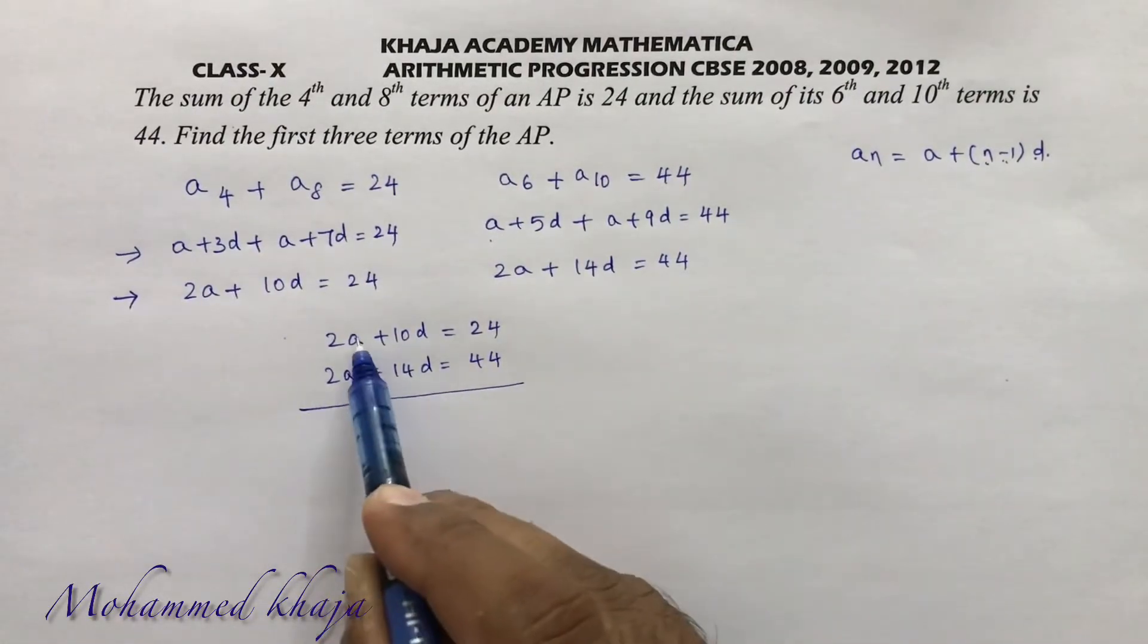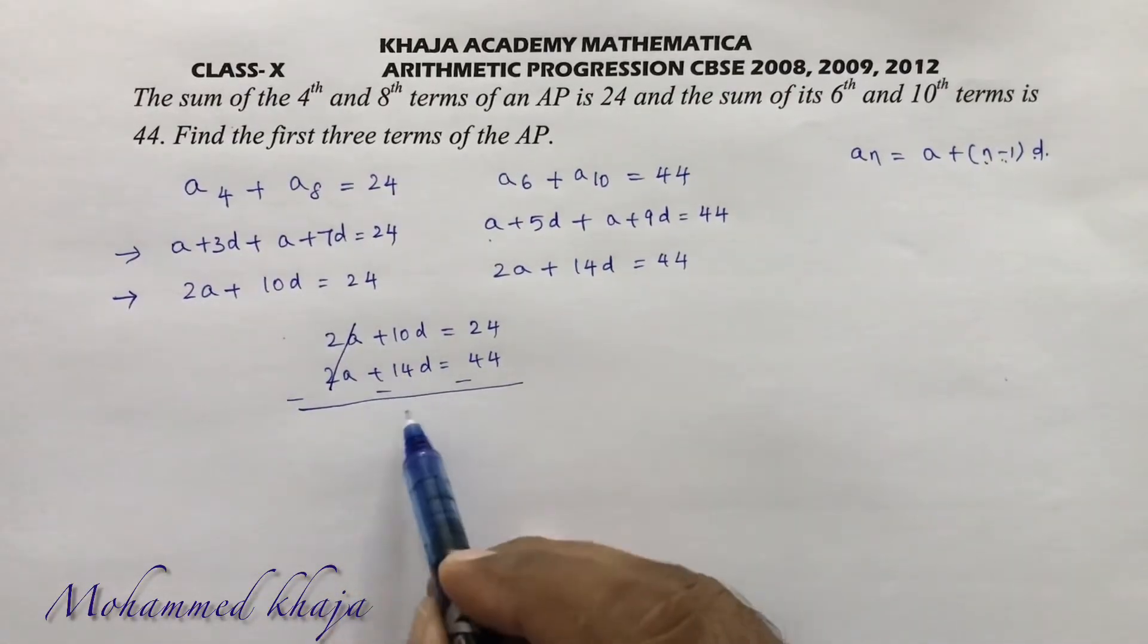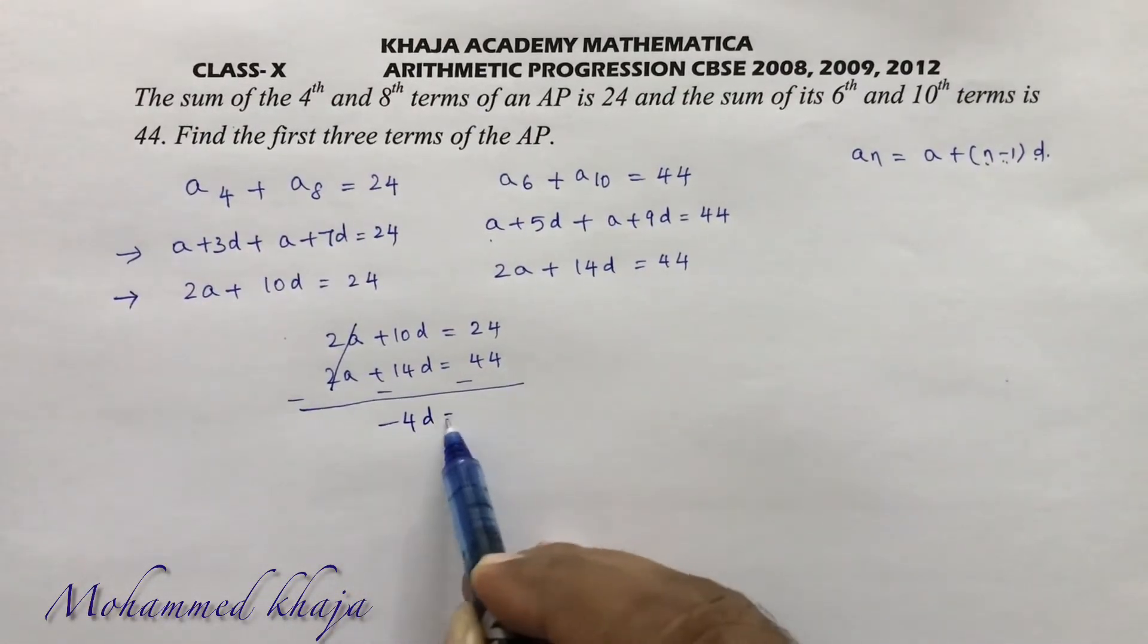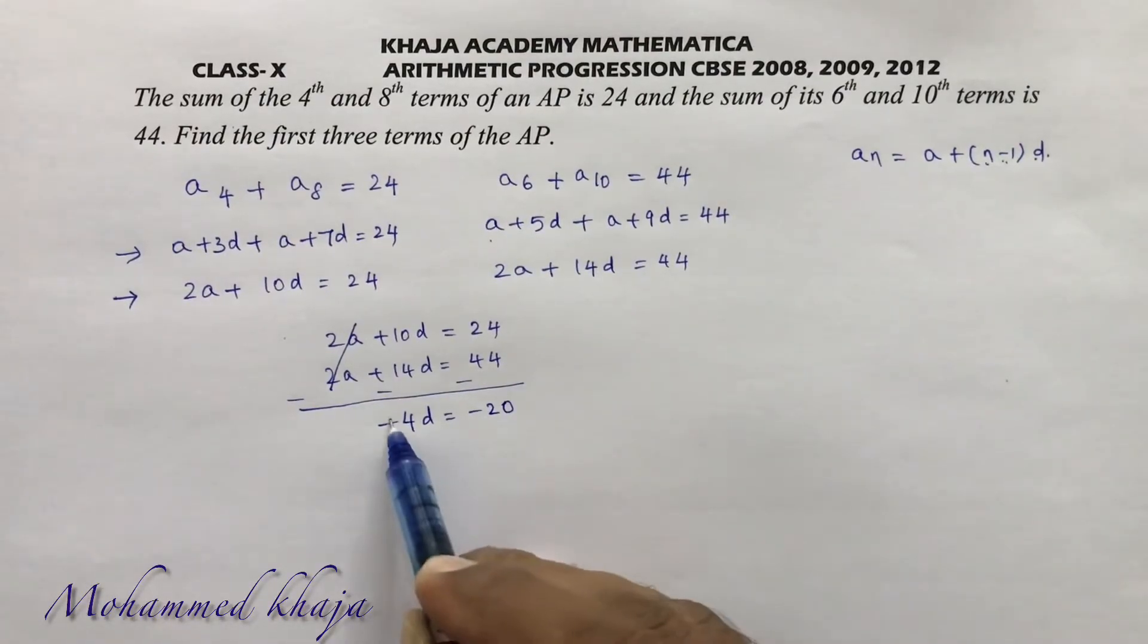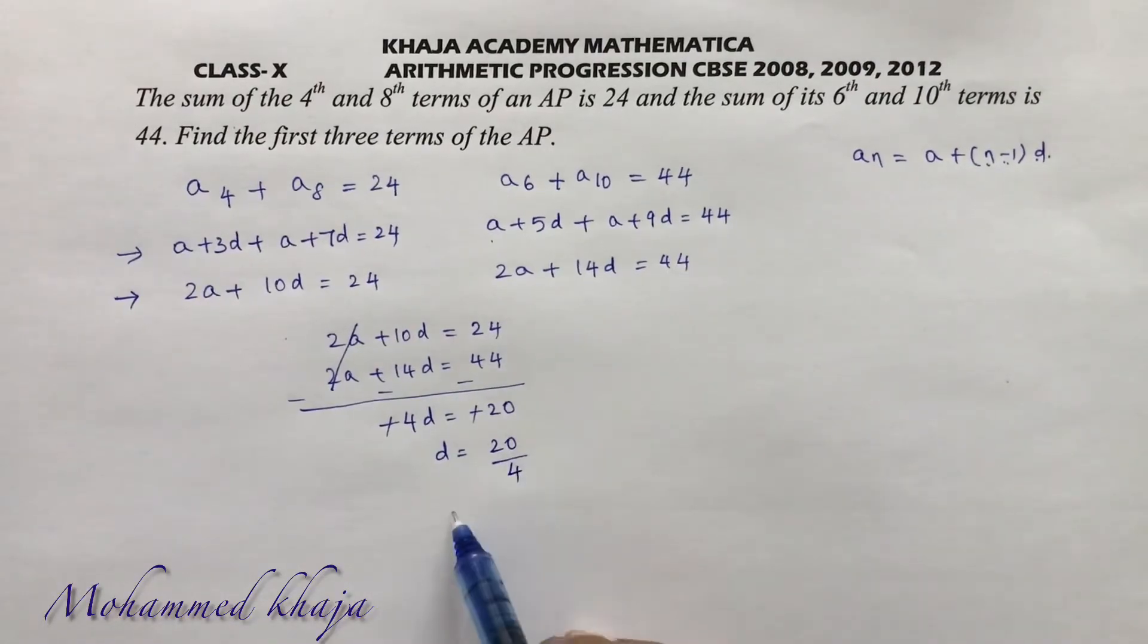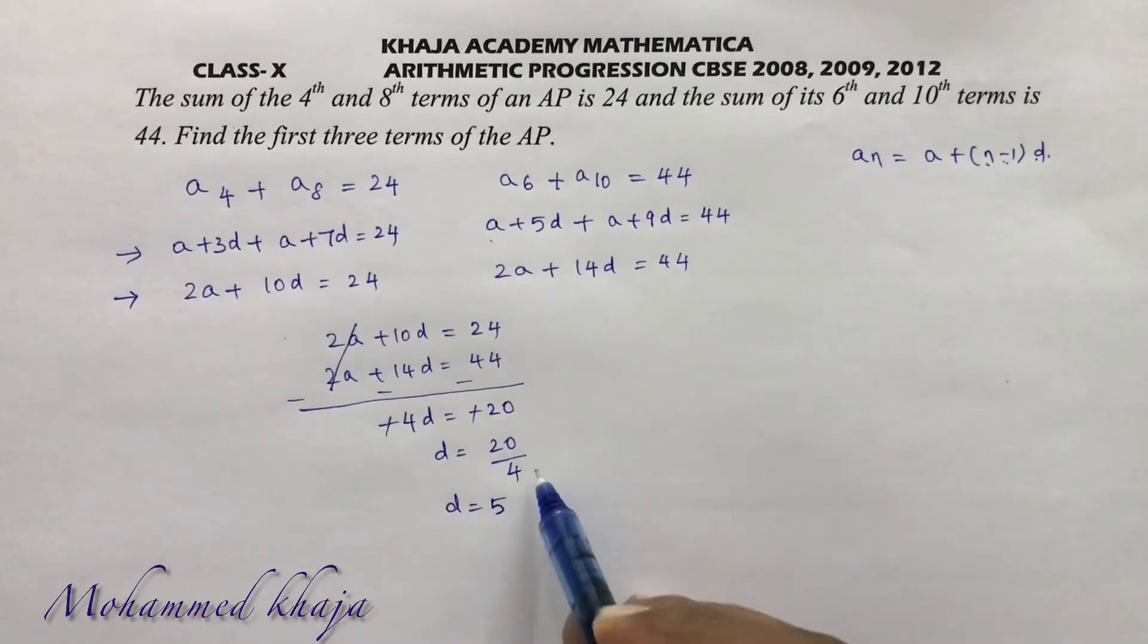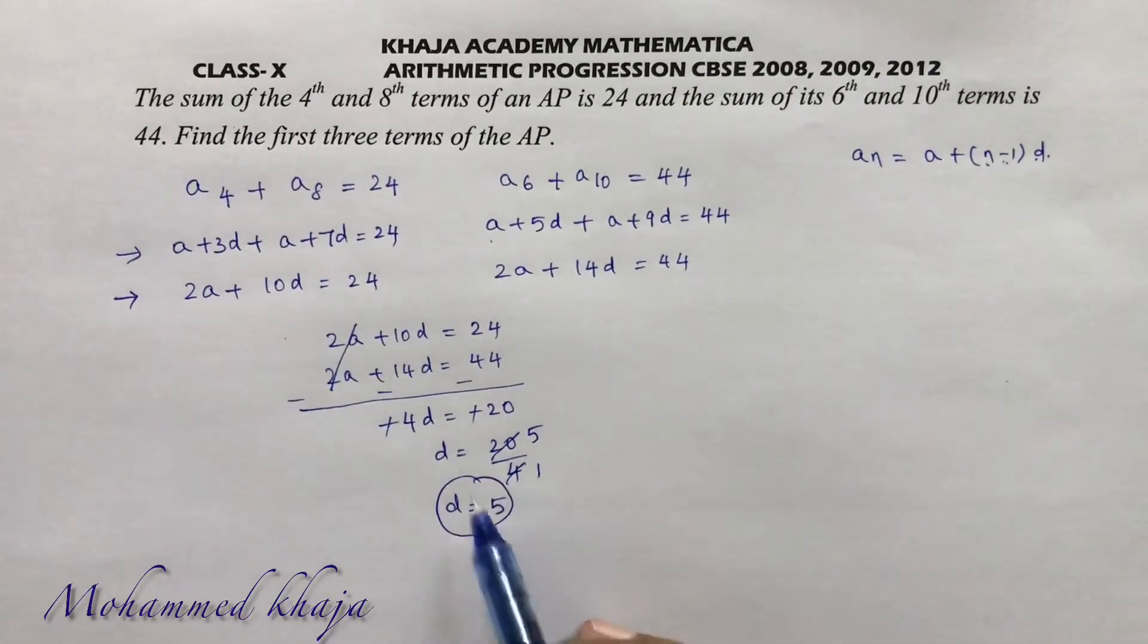I'll subtract because the coefficients of a are same. So 10 minus 14 is -4d, 24 minus 44 is -20. Minus minus cancel, so the value of d is 20/4, which is 5. So you got the value of d.